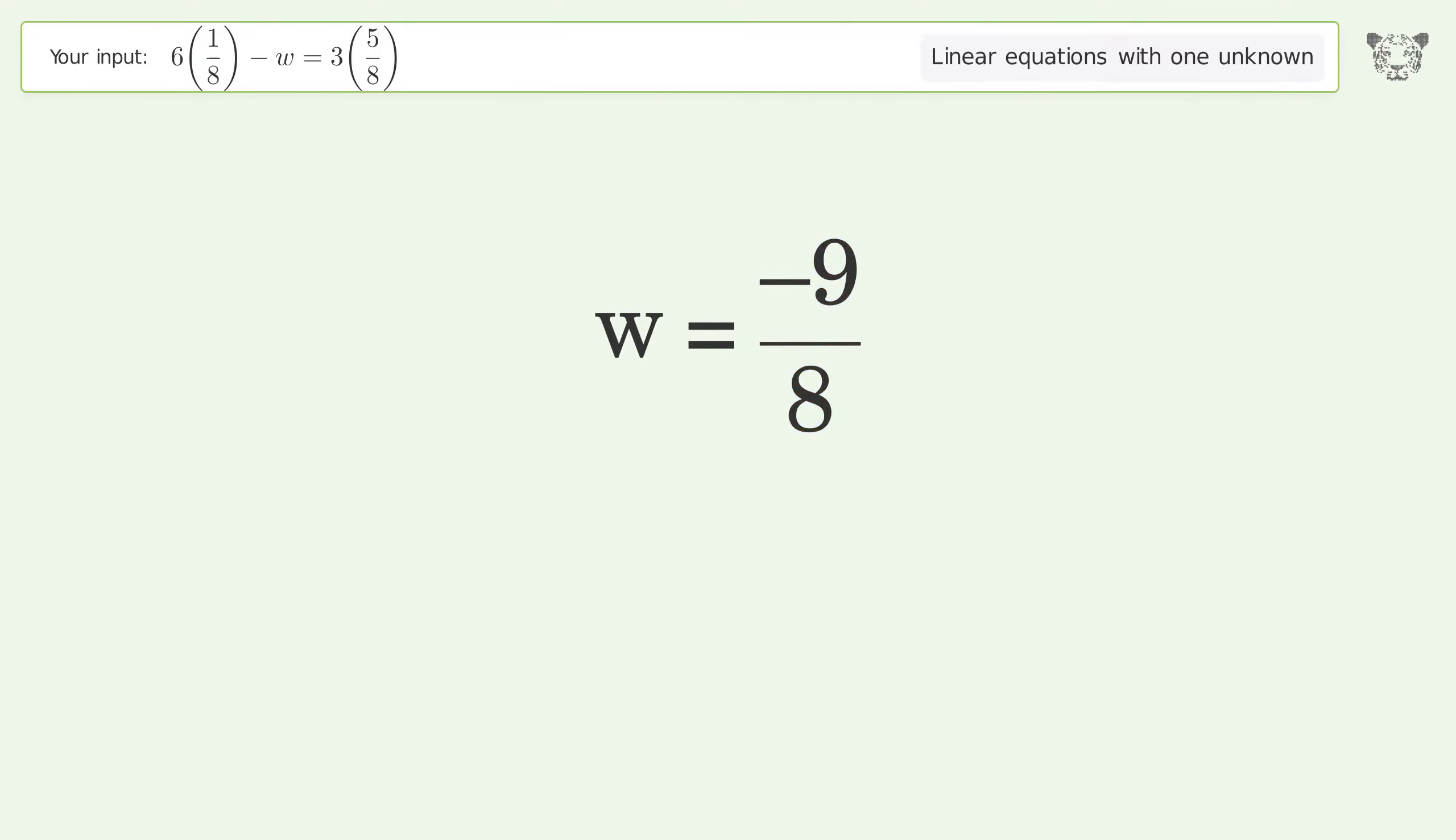And so the final result is w equals negative 9 over 8.